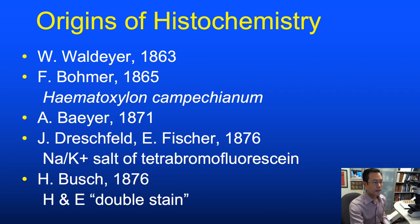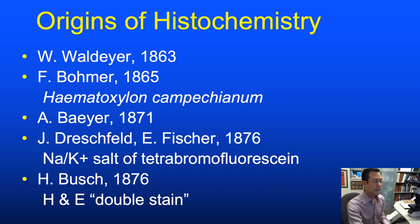In the 1860s, the field of histochemistry was pretty hot. Within a decade, we had the discovery of hematoxylin, followed by the synthesis of the sodium-potassium salt of tetrabromofluorescine—also known as eosin—and in 1876, the use of the hematoxylin and eosin double stain.